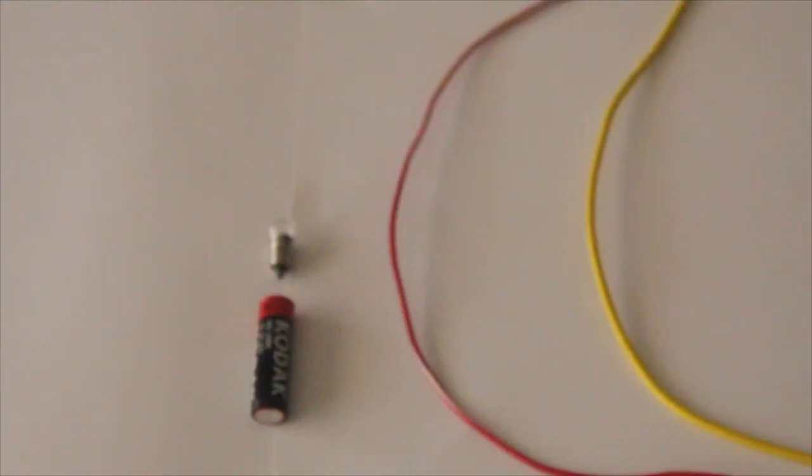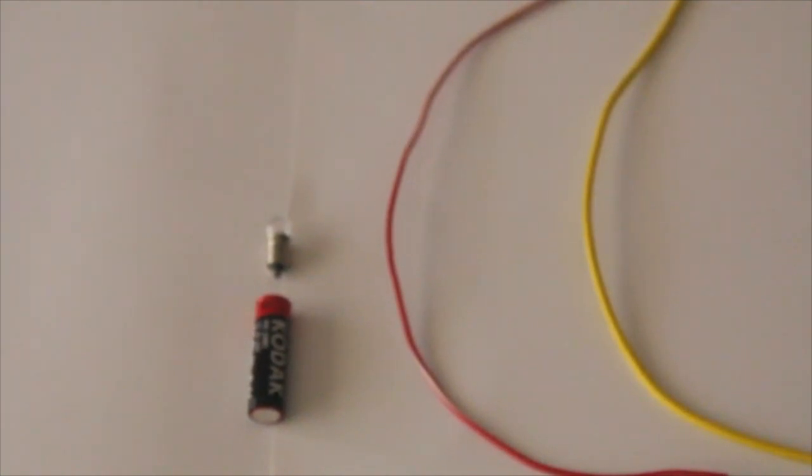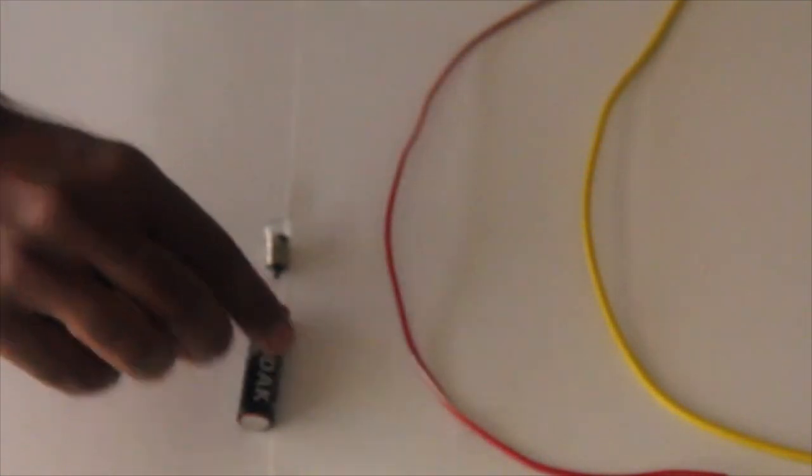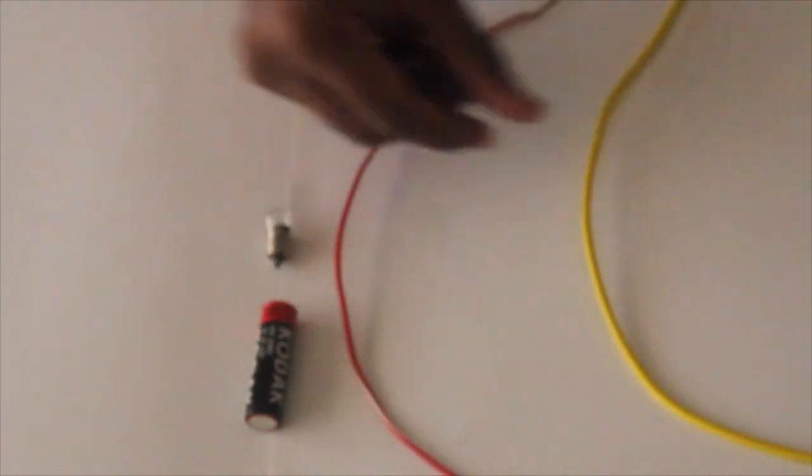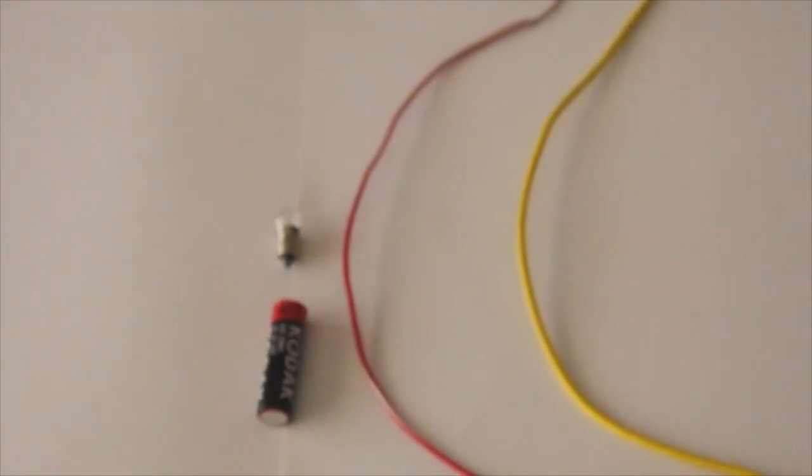These are the things required to make an electric circuit: an electric cell, a small bulb, and two colored copper wires with exposed ends.